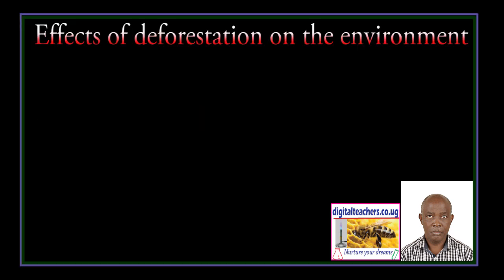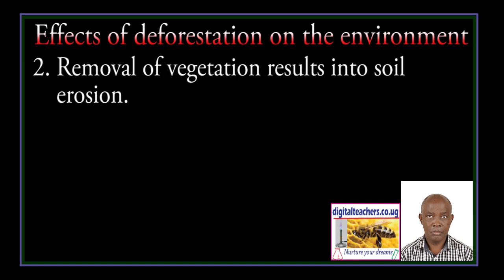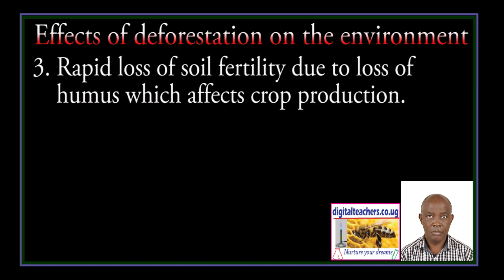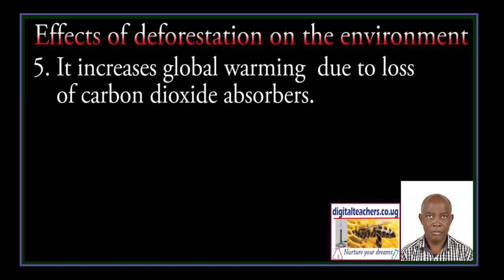The effects of deforestation on the environment: for example, decline in rainfall; removal of vegetation results in soil erosion; rapid loss of soil fertility due to loss of humus, which affects crop production.